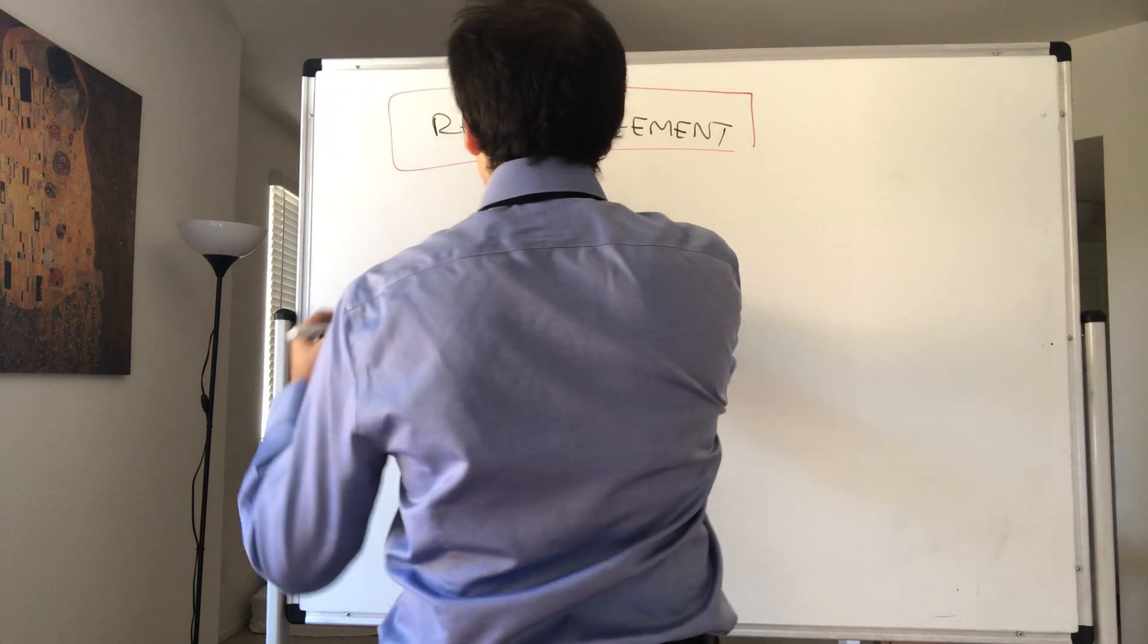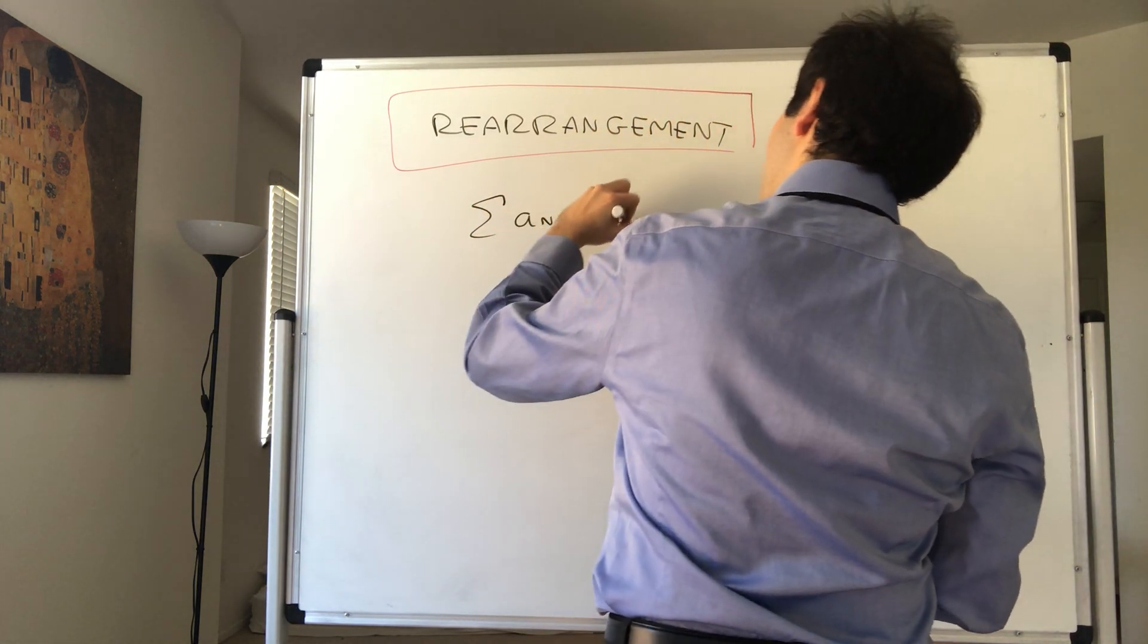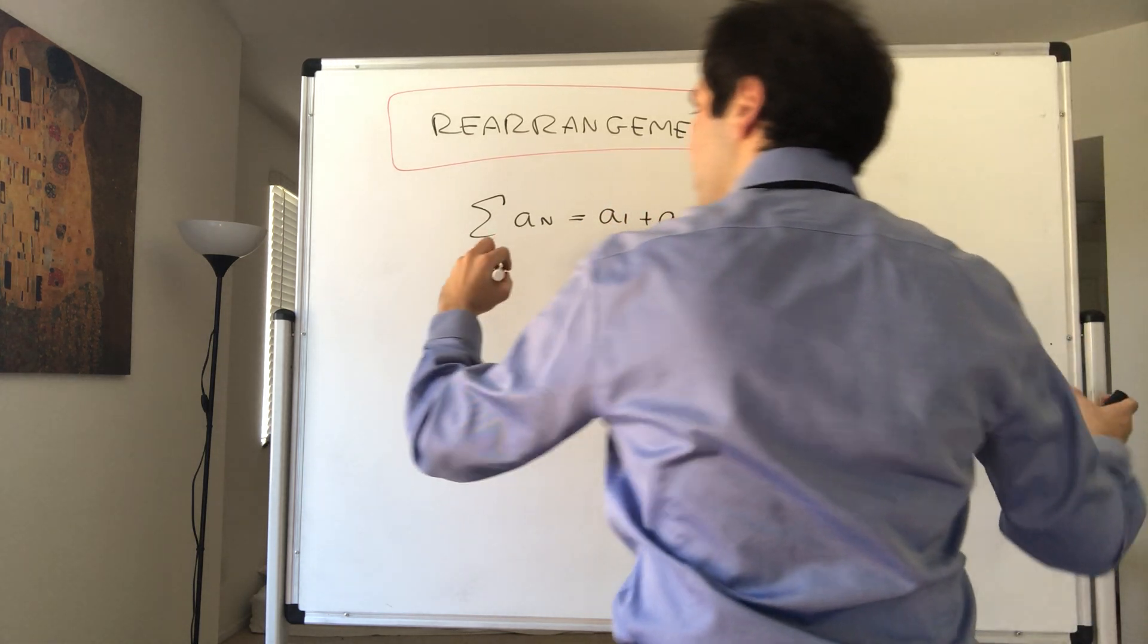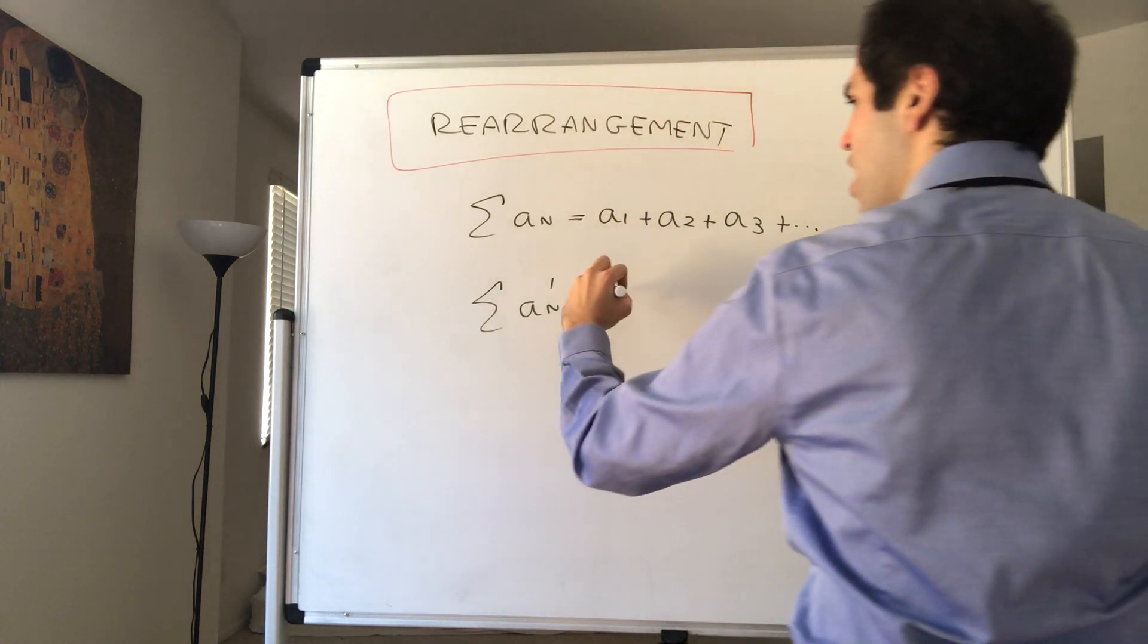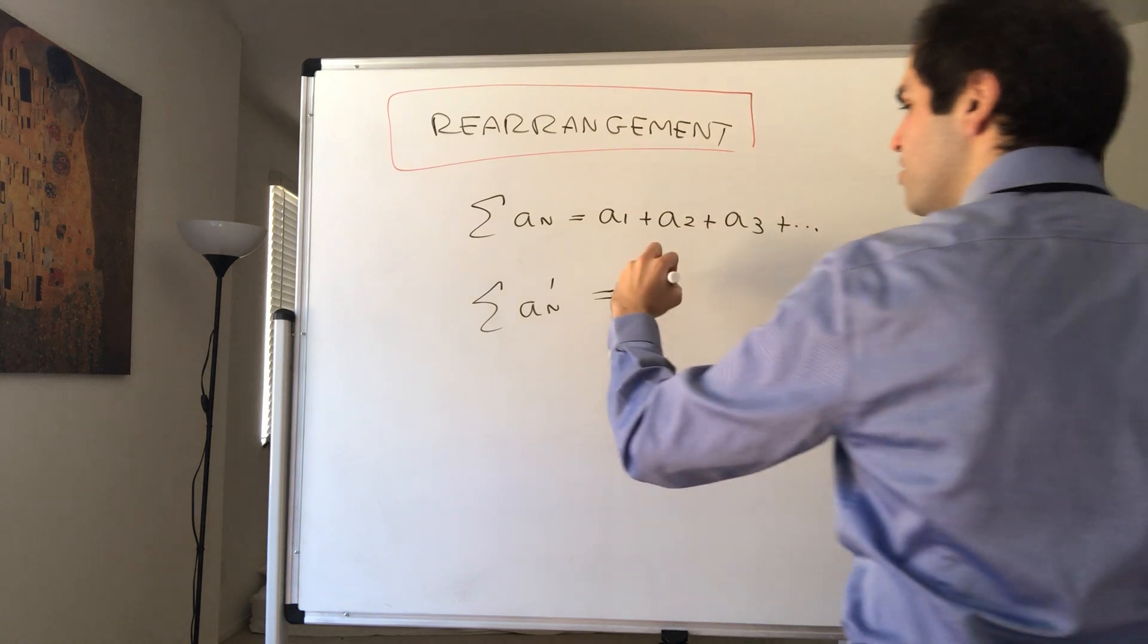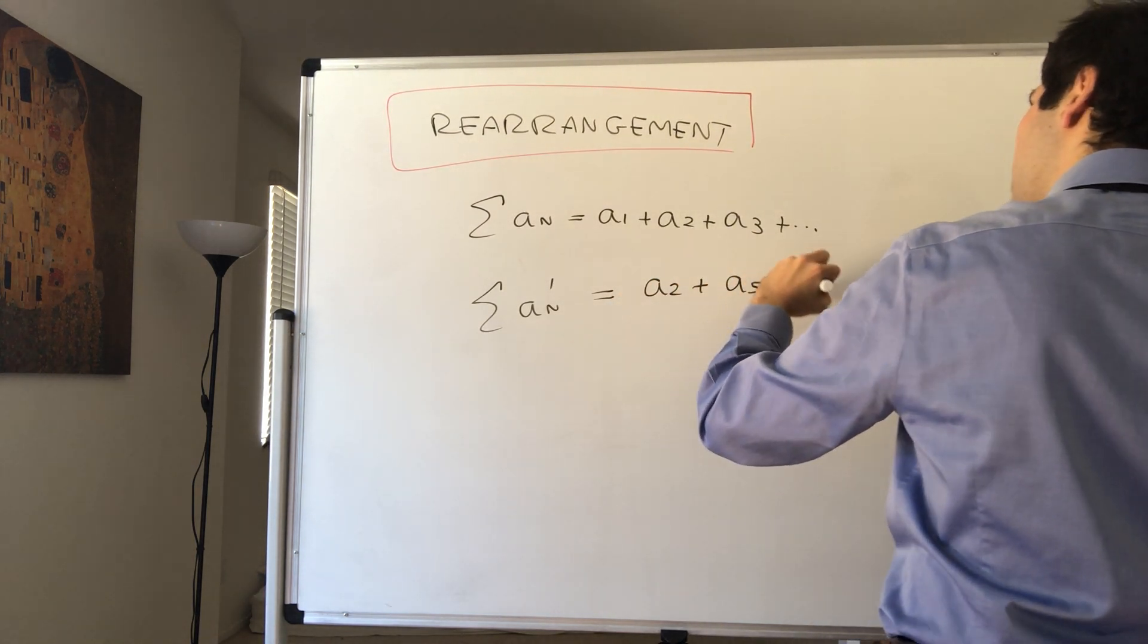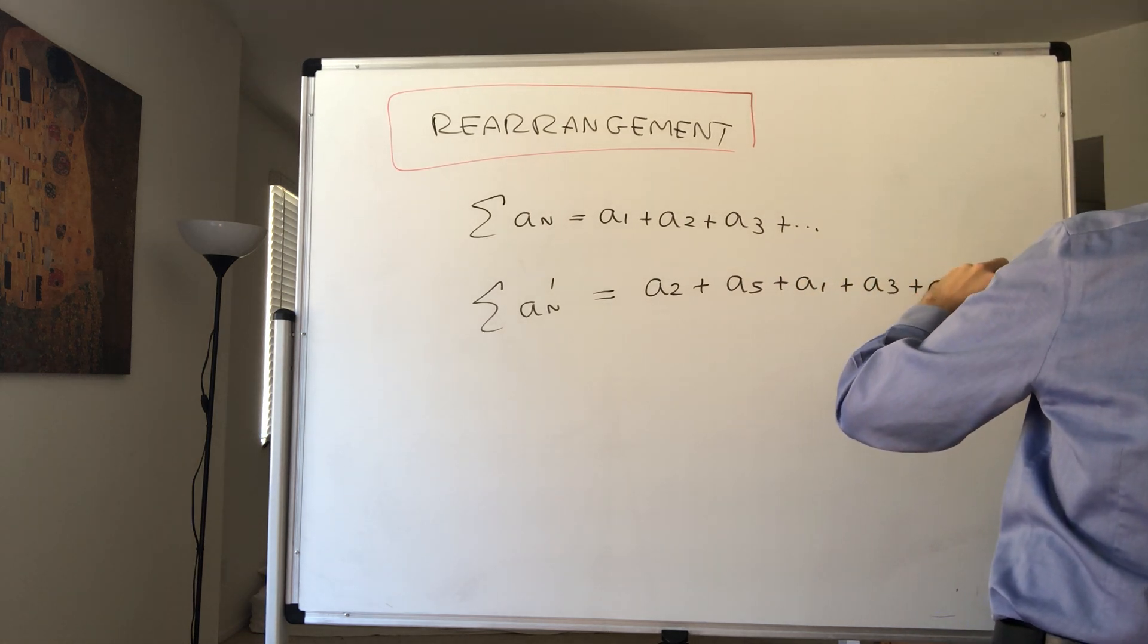For instance, if you have a series, sum of a_n which is a1 plus a2 plus a3 plus dot dot dot, then a rearrangement is just a series of the form a'_n which for instance is a2 plus a5 plus a1 plus a3 plus a4 dot dot dot.